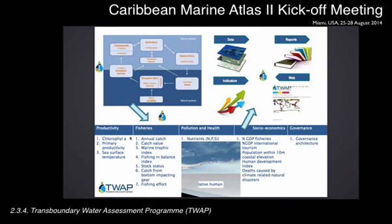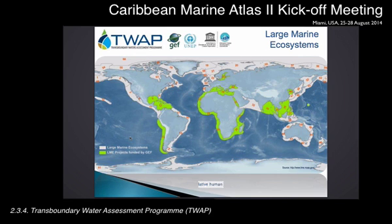The global coastal ocean is divided into 66 different large marine ecosystems, which are natural regions of coastal and ocean enclosing waters from river basins to the seaward boundaries of continental shelves, margins of coastal currents, and water masses. This is the definition of Ken Sherman from NOAA. The natural boundaries are based on four ecological criteria: bathymetry, hydrography, productivity, and trophically related populations.